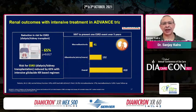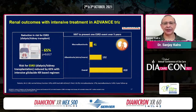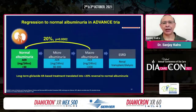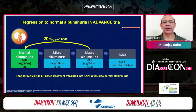Irrespective of whether the patient had macro- or microalbuminuria or normoalbuminuria, the gliclazide XR-based regimen was able to reduce the risk of end-stage renal disease by 65% — highly significant. And if you started gliclazide XR in a person with macroalbuminuria, the results were even better. In fact, macroalbuminuria could be converted — regressed — to micro and then to normoalbuminuria with this regimen. Remember that in ADVANCE, we used gliclazide and also perindopril.